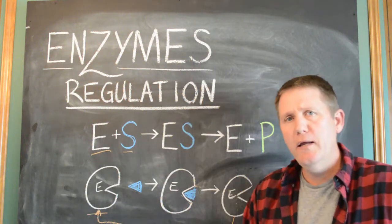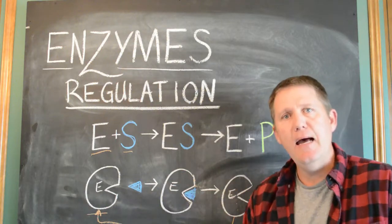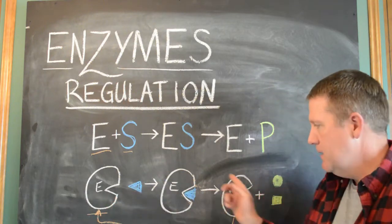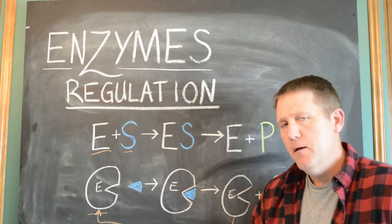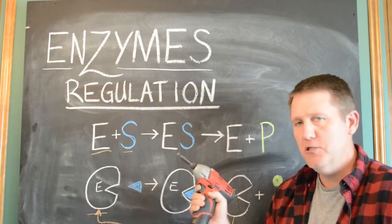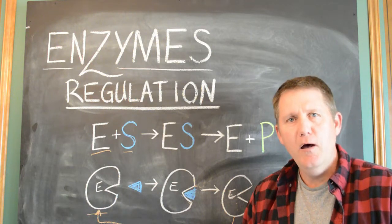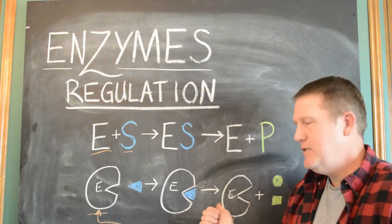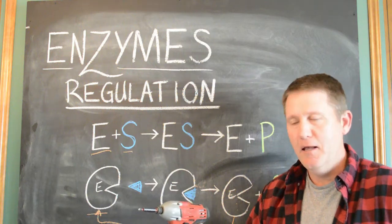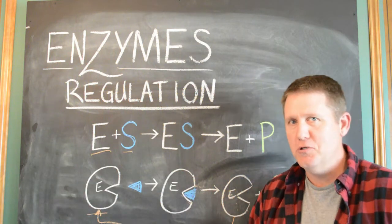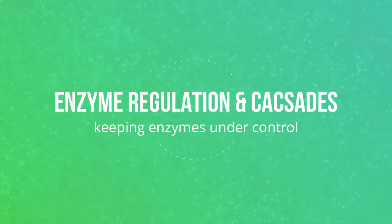I thought it'd be easiest to talk about the regulation of enzymes in a separate video. Same topic as before, so I left this diagram up. Remember, enzymes continually get reused. These are powerful tools in the body, and they're important. But we need to regulate them, because, like I showed the analogy before, these tools — you don't just want to keep going. You can't just leave this enzyme on all the time. We need to be able to turn these enzymes on and off.